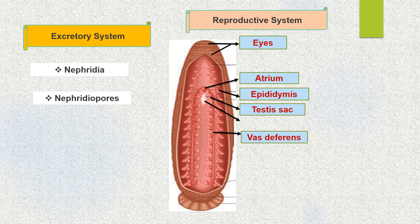Female reproductive system: it consists of ovary, oviduct and vagina. There is a single pair of ovaries in the 11th segment on the ventral side. Each ovary is a coiled ribbon-shaped structure. The ova bud from the ovary. The two oviducts join together to form a common oviduct. The common oviduct opens into the pear-shaped vagina at the mid-ventral posterior part of the 11th segment.